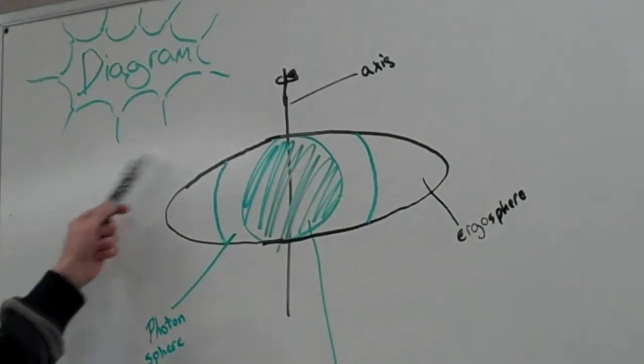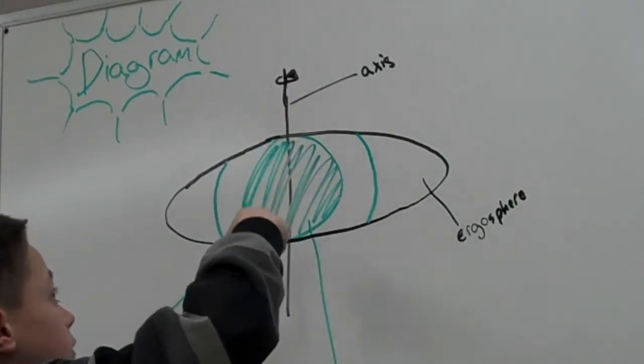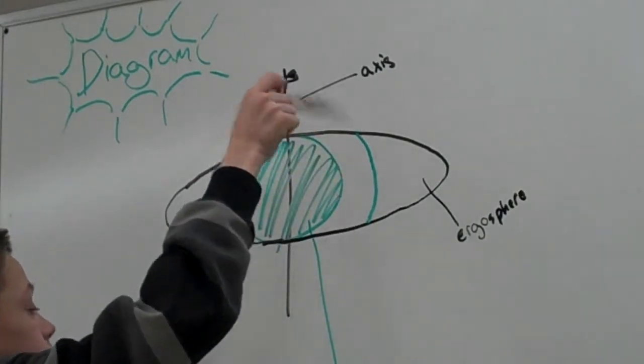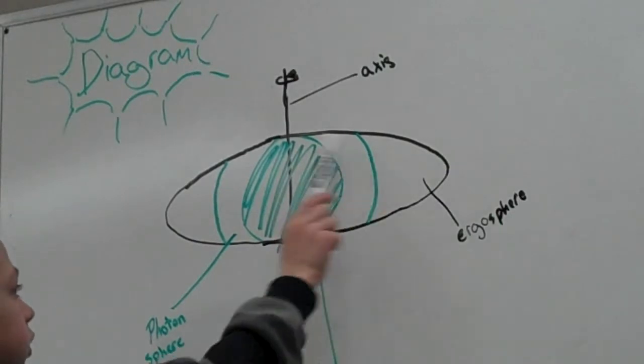So, this is my diagram. And then this is the axis of the black hole. It turns on its axis pretty fast. Then this part is the event horizon, point of no return. Then around it is the ergo sphere.